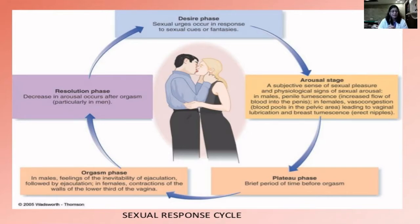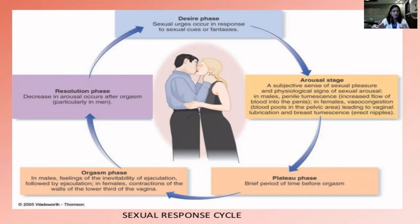When the orgasm happens, it is ejaculation in men and contractions of the walls of the lower one-third of the vagina in women. And then finally everything quietens down — that is what we call the resolution phase. Resolution phase is very important because in men they really need a refractory period before they can get penile tumescence or another orgasm. This refractory period is not there in women — they are capable of multiple orgasms, one after the other, though that does not mean they are having a better quality of sex.